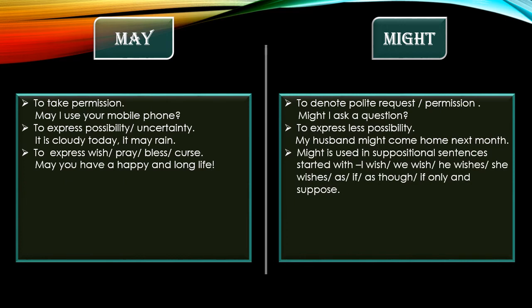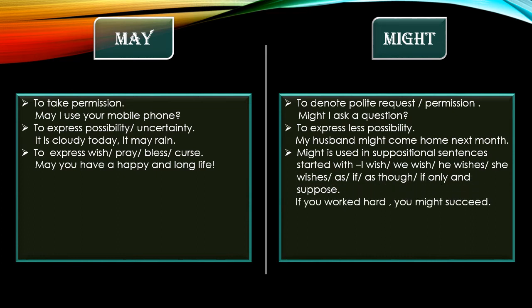Might is used in suppositional sentences starting with words like 'I wish,' 'we wish,' 'as if,' 'as though,' 'if only,' and 'suppose.' So might is used to express suppositional conditions. For example: 'If you work hard, you might succeed' — you can see the sentence starts with 'if,' which introduces the suppositional condition.